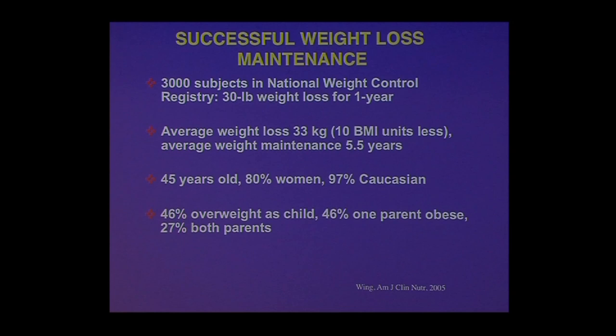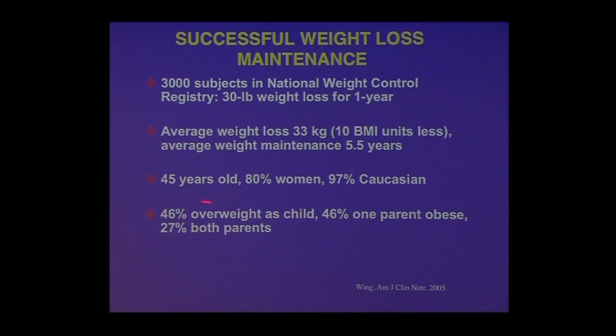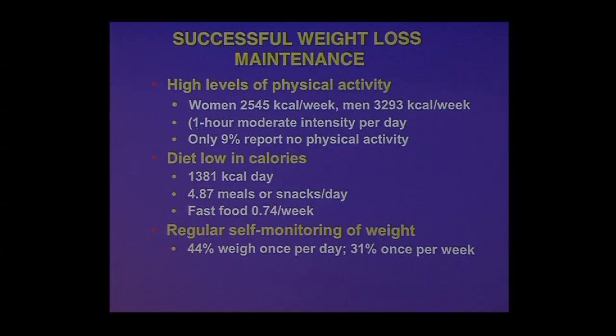Much of this data comes from the National Weight Control Registry — a collection of patients who have lost weight and kept it off, run out of Colorado. To qualify, you needed to have lost 30 pounds and kept it off for a year, though these people have actually lost double that and kept it off much longer. It's mostly a Caucasian, Colorado cohort, mostly women. Some were overweight as children and had a family history of obesity — proving that early onset obesity and family history is not a destiny. These registry members exercise a ton, eat a diet low in calories, and monitor their weight.